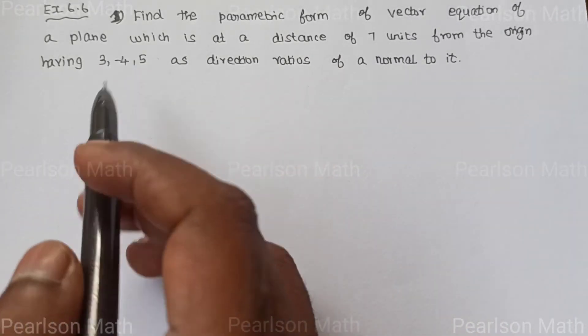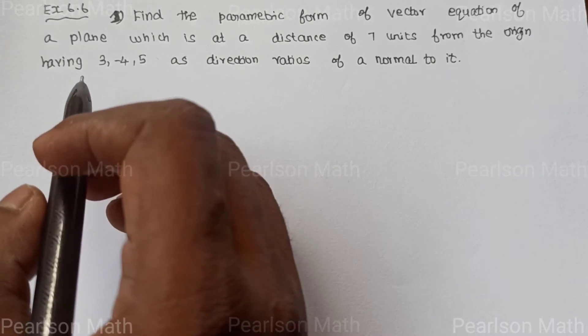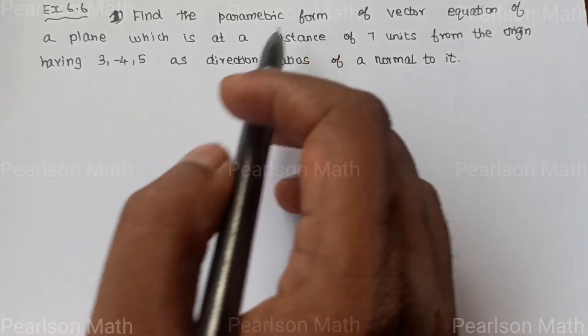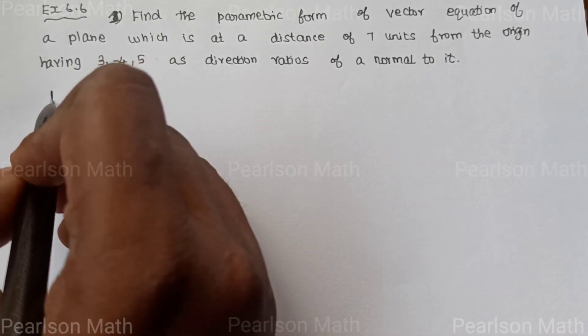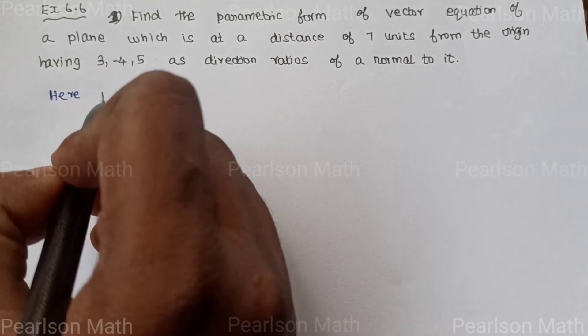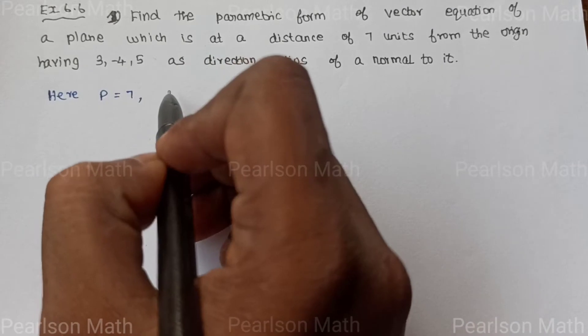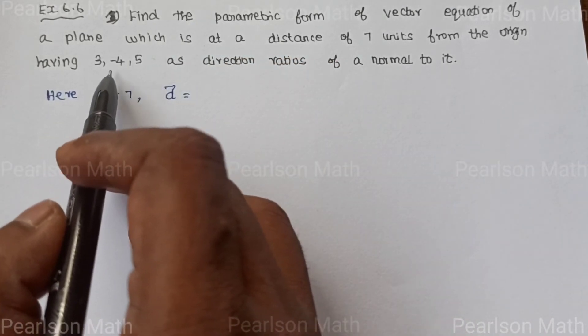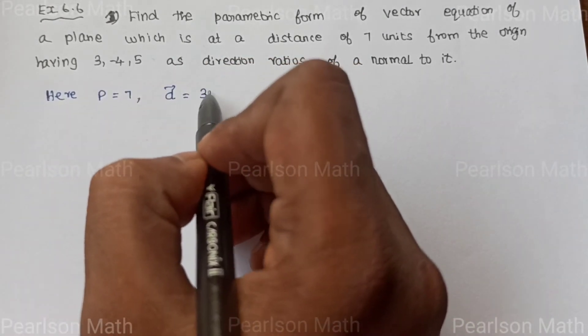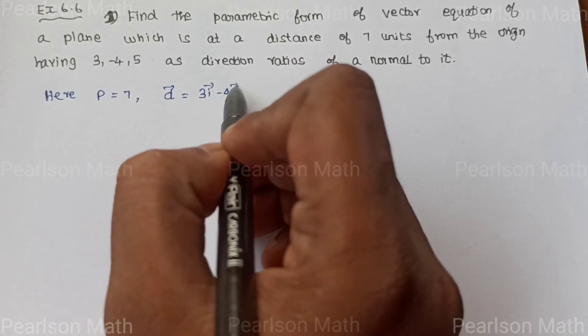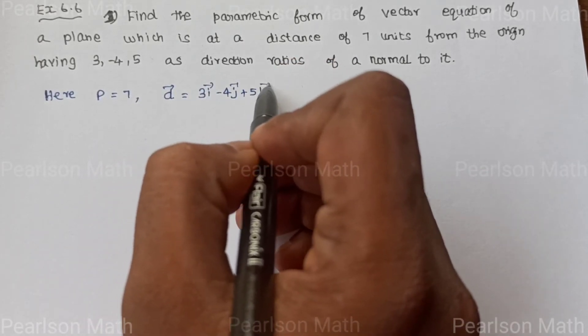So here, the parametric form of vector equation: distance P is 7 units, d vector direction ratios are 3, minus 4, 5. That's 3i vector minus 4j vector plus 5k vector.